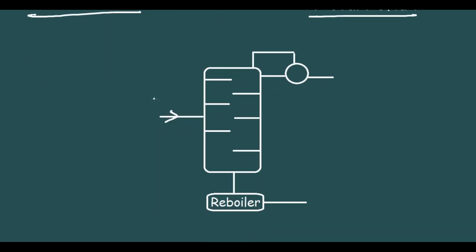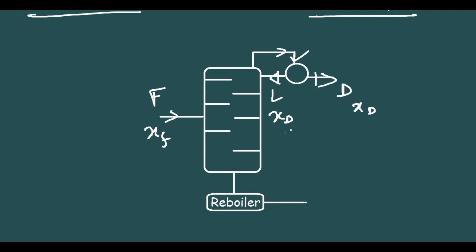Let's recall the symbols for the tower. The feed is denoted by F, and the mole fraction of the more volatile component in the feed is XF. The top product has a part recycled back to the column denoted as L, and a part taken out denoted as D. The composition — mole fraction of the more volatile component — in both L and D is the same, XT, since they come from the same stream. The bottom product is W, with composition XW.